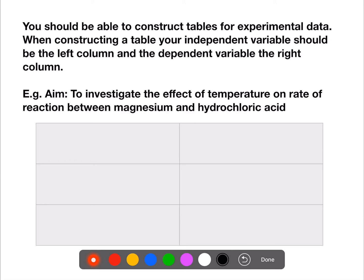And the dependent variable, the thing which you measured, should be in the right hand column. We have an aim here to investigate the effect of temperature on rate of reaction between magnesium and hydrochloric acid.